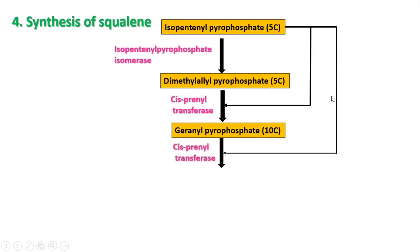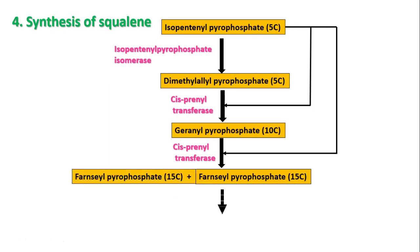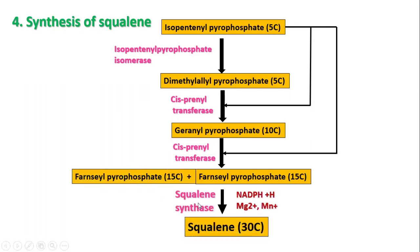Then one more isoprenoid unit combines with geranyl pyrophosphate to form farnesyl pyrophosphate, which is 15-carbon. Then two molecules of farnesyl pyrophosphate combine in the presence of squalene synthase — requiring NADPH, magnesium, and manganese — to form squalene, which is 30-carbon. Since 3 isoprene units form farnesyl, two farnesyl molecules require 6 isoprenoid units to form the 30-carbon linear squalene.